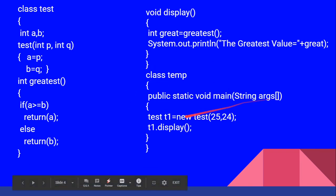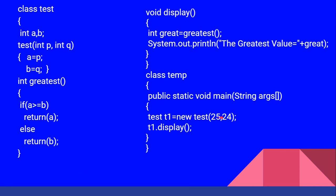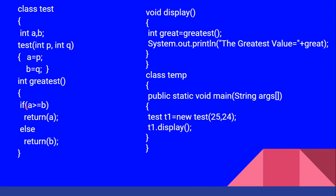The main class is called stem. Inside public static void main, we create an object: test t1 = new test(25, 24). This creates an object of the test class with parameters 25 and 24. Then t1.display() is called, which accesses the display method. Inside display, int great = greatest() calls the greatest method, which checks if a is greater than or equal to b — that is, whether 25 is greater than 24. Since true, it returns a, which is 25.